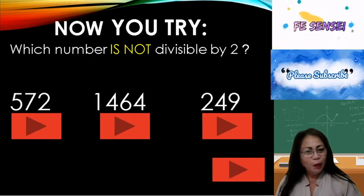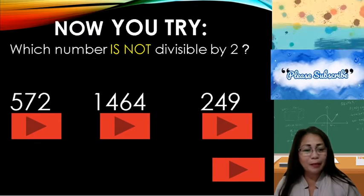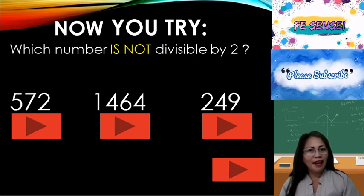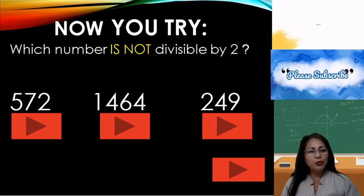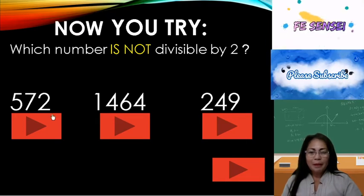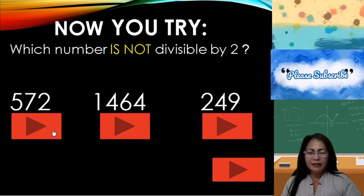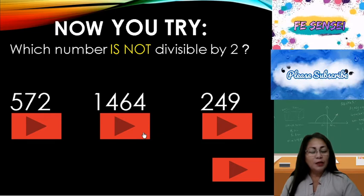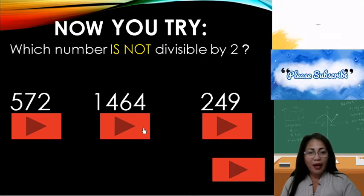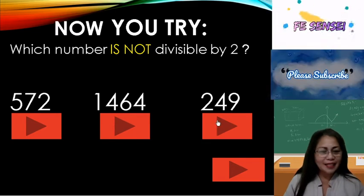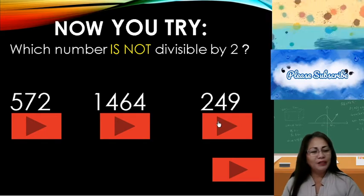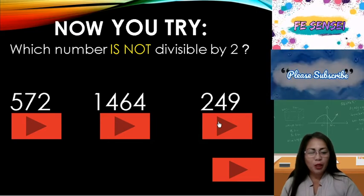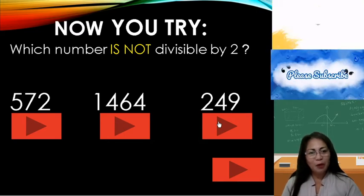Now you try. Which number is not divisible by 2? That is, which number does not end with 0, 2, 4, 6, and 8? First example: 572 — it ends with 2. Second example: 1,464 — it ends with 4. Last example: 249 — it ends with 9. Which number is not divisible by 2?